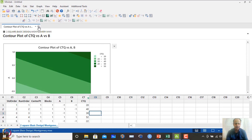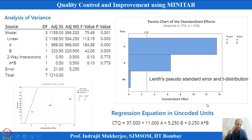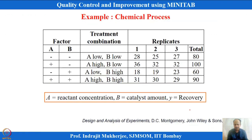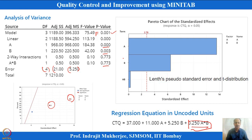Let us take a real example — a chemical process case study — which will be easier to understand. This is the graphical plot already generated: factor A is significant, factor B is significant, AB interaction is not significant. We can drop AB and develop the regression equation again. The normal plot indicates which factors and interactions to retain or drop.